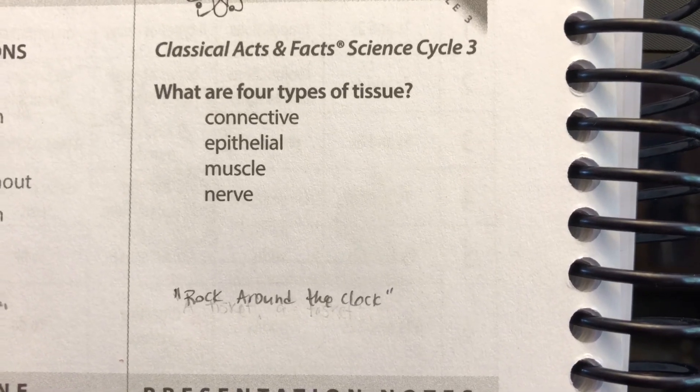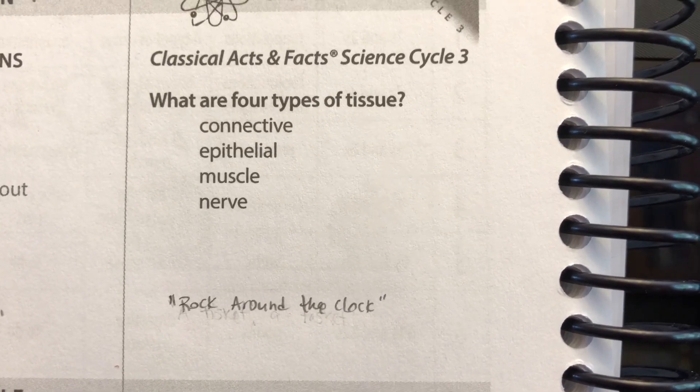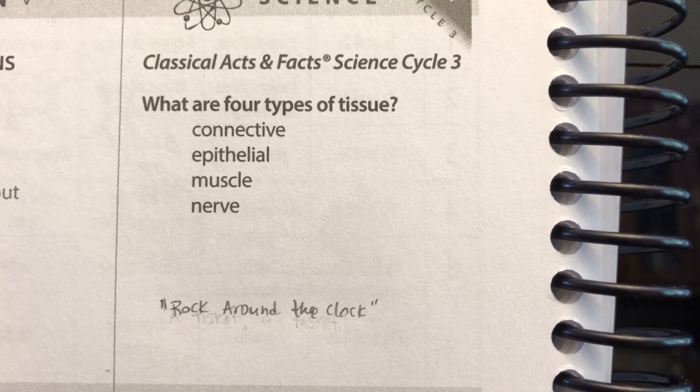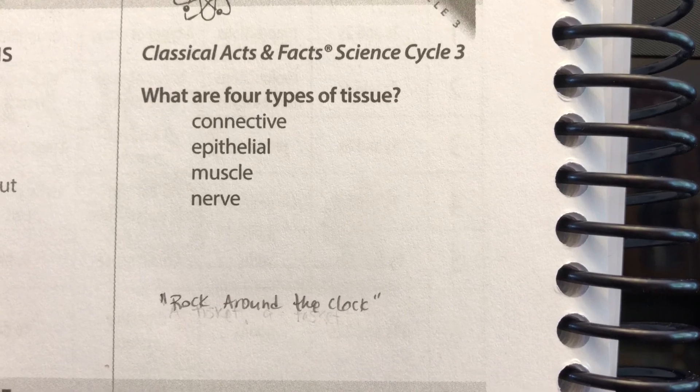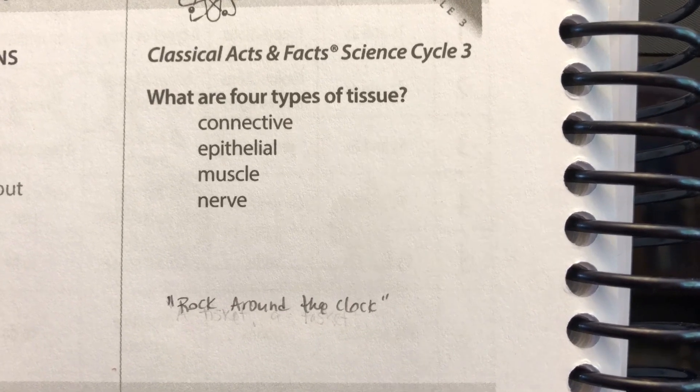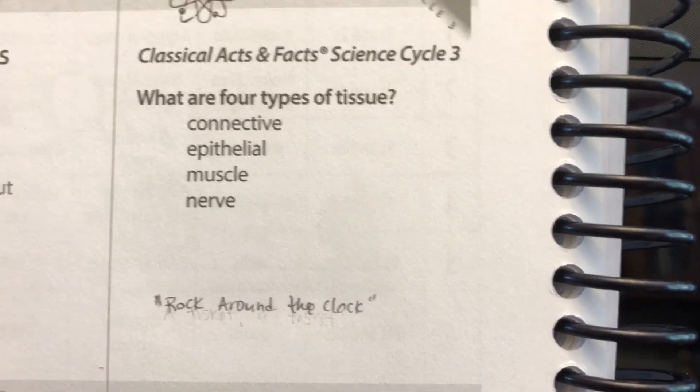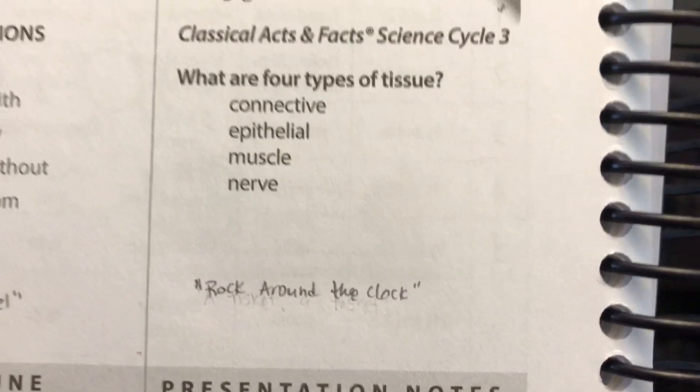CC Cycle Three, Week One Science. What are four types of tissue? To the tune of Rock Around the Clock.